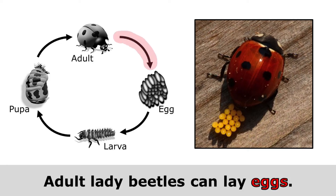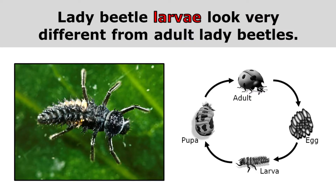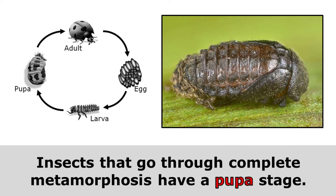Adult lady beetles can lay eggs, and you can see that happening in the picture. Those eggs hatch into lady beetle larvae, which look very different from adult lady beetles. Insects that go through complete metamorphosis have a pupa stage, and it's during this stage that the insect is often surrounded by a chrysalis or cocoon, which protects the insect as its body goes through huge changes.